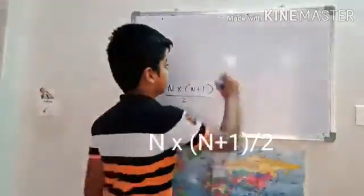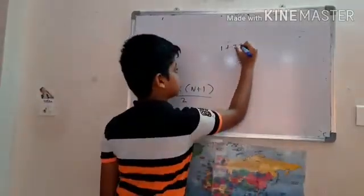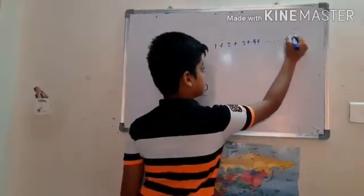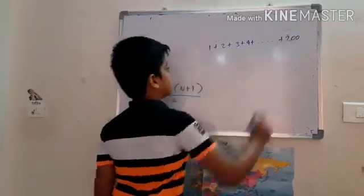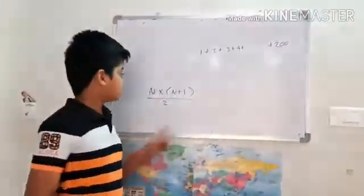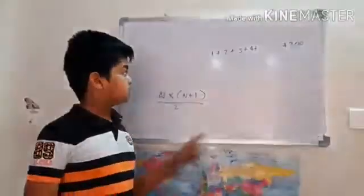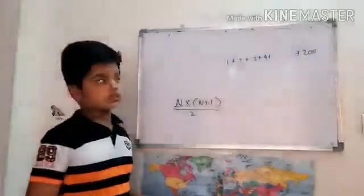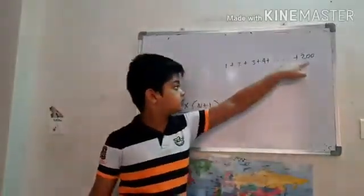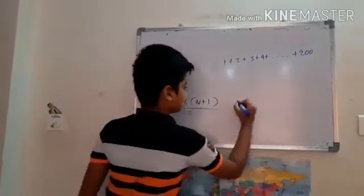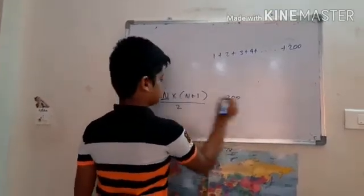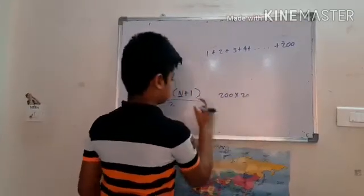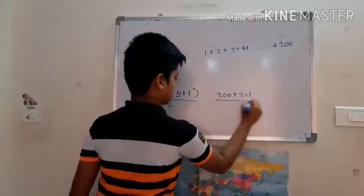Let us take an example. 1 plus 2 plus 3 plus 4 plus so on plus 200. This is very hard to calculate. Using this method, we can easily find the answer for this problem. Here N is the number of digits. In this example, the last digit is 200. So, 200 into 200 plus 1 by 2.